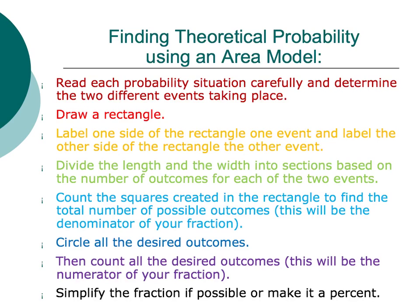The second step is to draw a rectangle. Then you're going to label one side of the rectangle with one event and label the other side the other event. Then divide the length and width into sections based on the number of outcomes for each of the two events. Then count the squares created in the rectangle to find the total number of possible outcomes. When setting up your fraction, this will be the denominator.